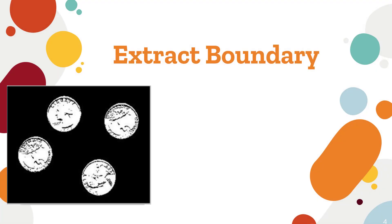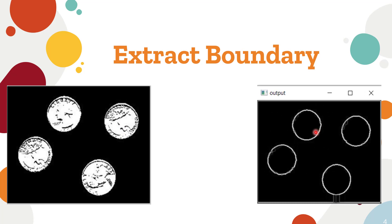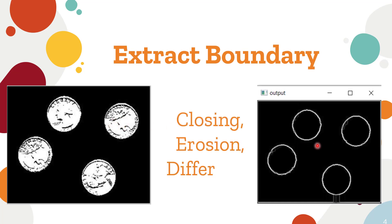Let's do this task where we have to extract the boundaries. These are different coins, and what we want is an image somewhat like this — the boundaries. First of all, what we need to do is remove the holes inside, remove these inconsistencies. For that, we will first perform the closing morphological operation, and after that we will perform erosion and differencing for finding the boundaries. Let's see how to do that in Python using OpenCV.